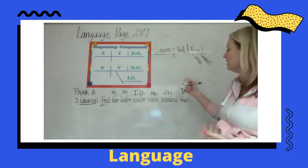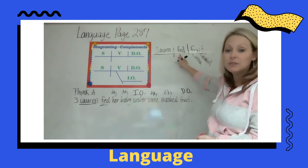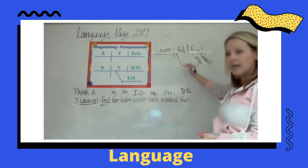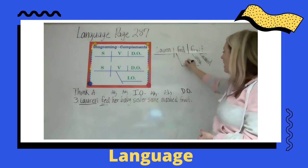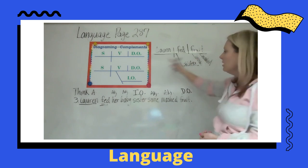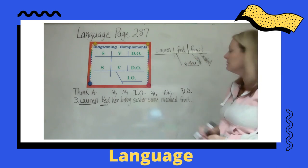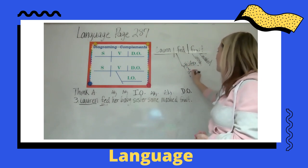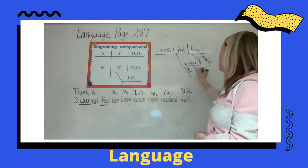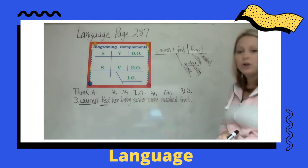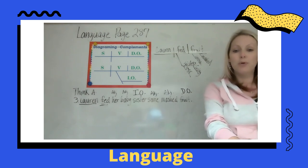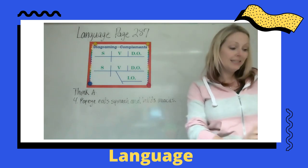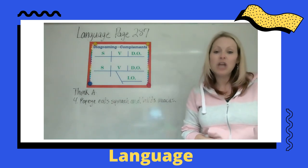Now we need to do our indirect object. Remember, the indirect object comes off of the verb. We do our diagonal line and then our horizontal line, and here we have sister as our indirect object. Which sister? Her sister — and which one of her sisters? The baby one. Those are your adjectives. That's your diagramming for number three.